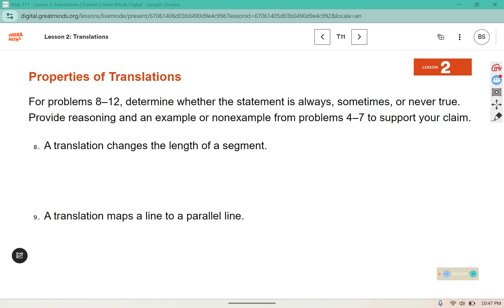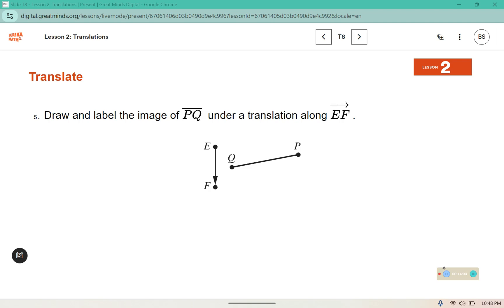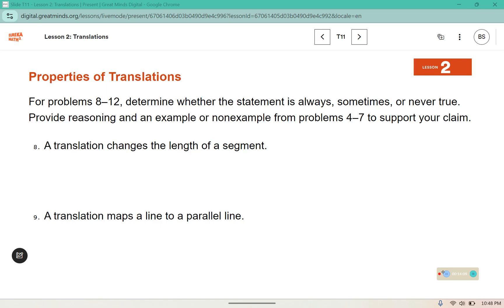For problems 8 through 12, determine whether the statement is always, sometimes, or never true. Provide reasoning and examples or non-examples for problems 4 through 7 to support your claim. A translation changes the length of a segment. That is never true. You can see that the segments remained the same for all of the problems that we did. Problem 5 specifically had a segment and it remained the same when we translated it, so you can say example 5 here in 8.